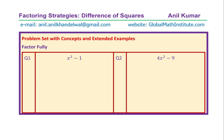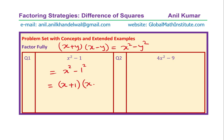The very first example is x squared minus 1. We know x plus y times x minus y equals x squared minus y squared. So here y is 1, and therefore we can write this as x plus 1 times x minus 1. That is how we factor.